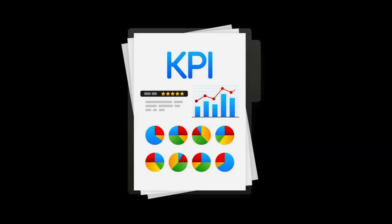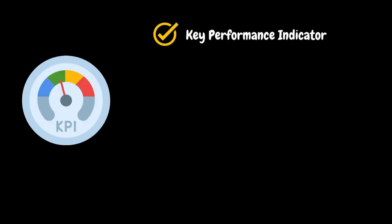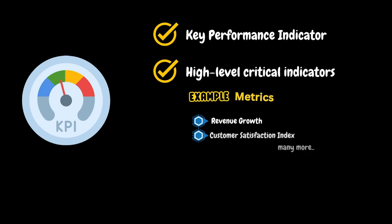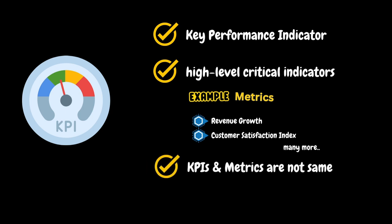During performance test planning sessions or discussions, we will come across a term called KPI. Let's quickly explore it. KPI stands for key performance indicator. KPIs are high level indicators that reflect an organization's strategic goals and objectives, for example, revenue growth, customer satisfaction index, and many more. KPIs and metrics are often interrelated, but technically they are not the same thing. For example, a KPI for your performance testing might be the percentage of users who complete a transaction within a certain time limit, while a metric for the same scenario might be the average transaction response time.